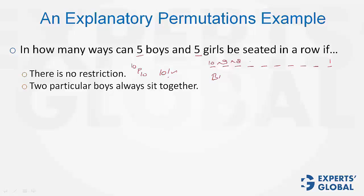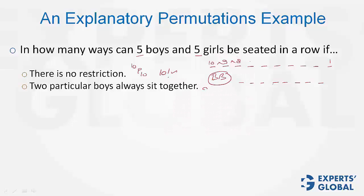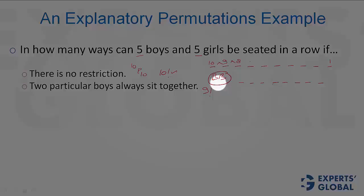Case 2: 2 particular boys always sit together. Consider these 2 boys as 1 entity, and then there are 8 other entities. So in all, we have 8 single entities and 1 pair — therefore 9 entities. These 9 entities can be arranged in 9 factorial ways. And these 2 boys can also be arranged among themselves in 2 factorial ways. The answer is 9 factorial times 2 factorial.